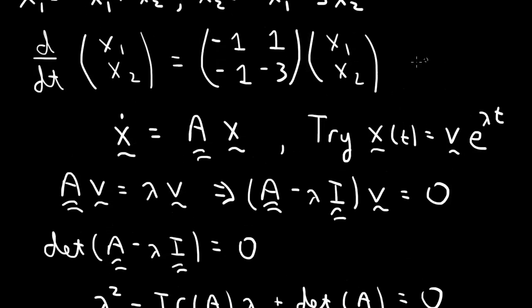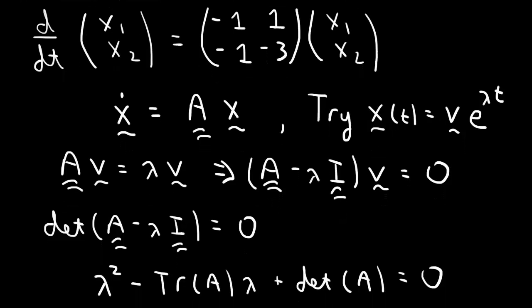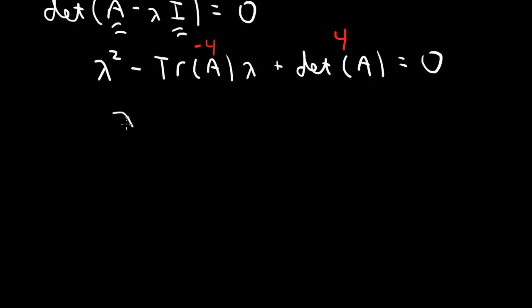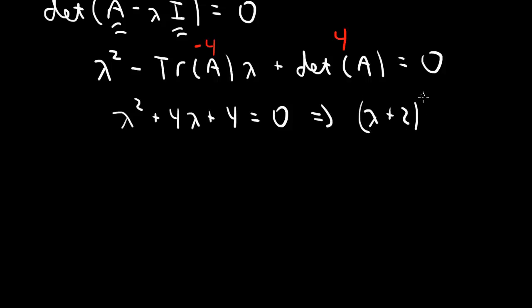Our matrix A is [-1, 1; -1, -3]. The trace is minus 1 plus minus 3, which is minus 4. The determinant is (-1)(-3) minus (1)(-1), which is 3 plus 1 equals 4. So the eigenvalue equation becomes lambda squared plus 4 lambda plus 4 equals 0, which factors as (lambda plus 2) squared equals 0. We have only one eigenvalue: lambda equals minus 2.